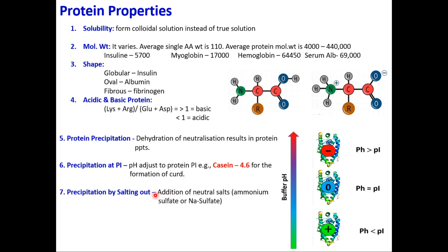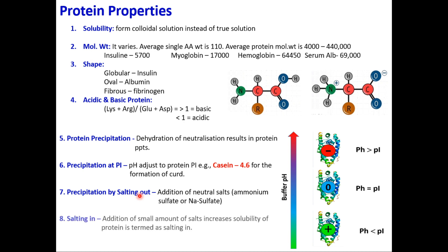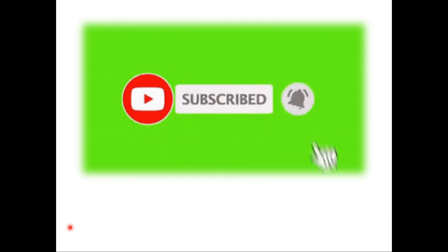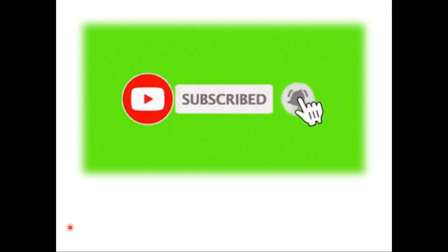Salting out and salting in are important methods. The important salts to remember are ammonium sulfate and sodium sulfate. If a high amount of ammonium sulfate or sodium sulfate is added, it is called salting out — the protein will precipitate out. If a low amount is added, it helps the protein dissolve in solution — this is called salting in. I hope this lecture will be very fruitful. If you like this lecture, please subscribe to my channel and hit the bell icon so you receive the latest notifications. Thank you very much, take care.